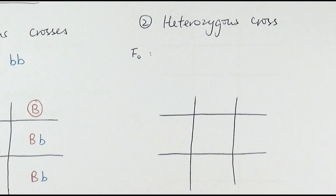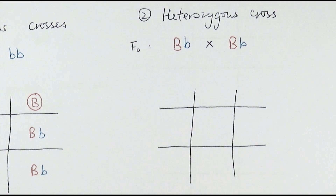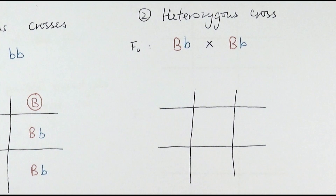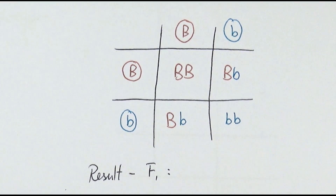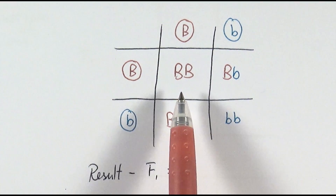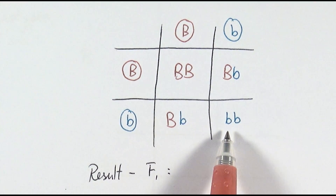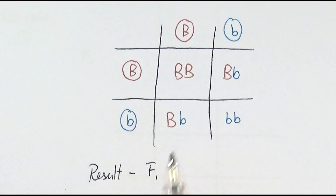A heterozygous cross, as the name implies, is when you have two heterozygous individuals crossing together. Each of these individuals can now make gametes that may contain different types of alleles — rather than in the homozygous cross where they can only make gametes containing one type of allele, here they can make two different types. So the offspring's allele combinations would be different from the homozygous cross. We get one out of four that is homozygous dominant, one out of four homozygous recessive, and two out of four heterozygous.